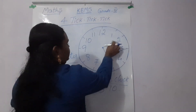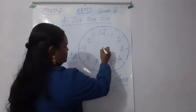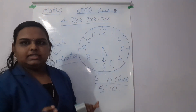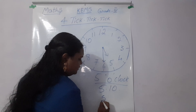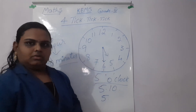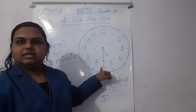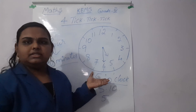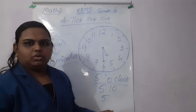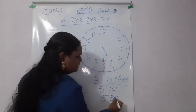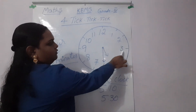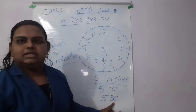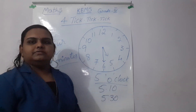If the long hand is pointing like this — the short hand is at 5, which represents the hour, so we write 5 first. Next, the long hand represents the minutes; it is pointing to 6. We don't write 6 — we write 30, because 5, 10, 15, 20, 25, 30. So 6 represents 30 minutes. The time is 5:30, that is five and a half hours.